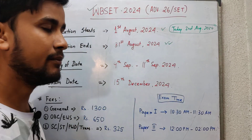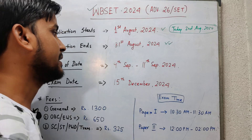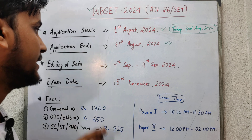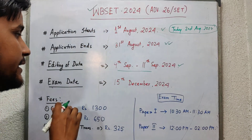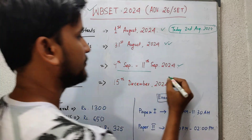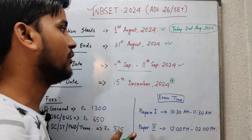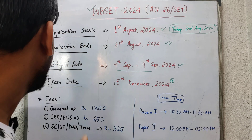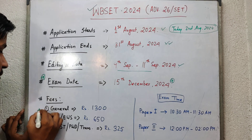If you have given any wrong data in the application form, you have the option to edit that data from 9th September to 11th September 2024. The most important thing — the date of exam is 15th December 2024. This is the main important date for the upcoming West Bengal SET 2024 exam.